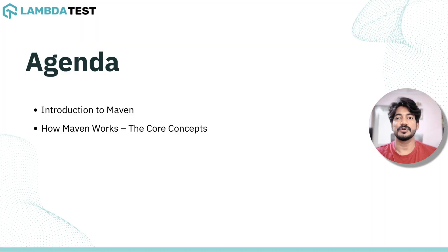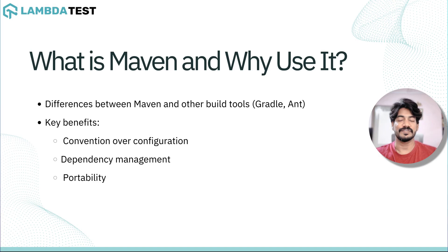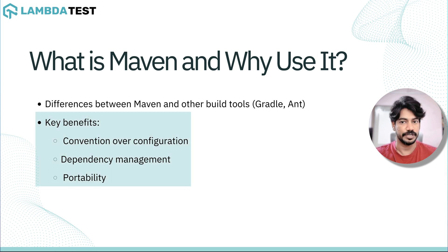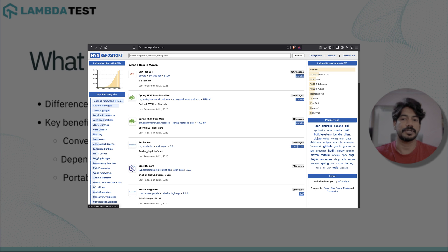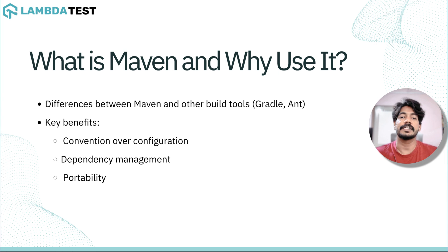In this video I'm going to give an introduction to Maven and cover its core concepts. Apache Maven is a build automation and project management tool used primarily for Java projects. It was designed to simplify the build process by introducing convention over configuration, meaning it follows standard project structures and build lifecycles so you don't have to write custom build scripts every time. Maven manages project dependencies from a central repository, standardizes project builds with a unified pom.xml, and supports multiple plugins and automated documentation generation.